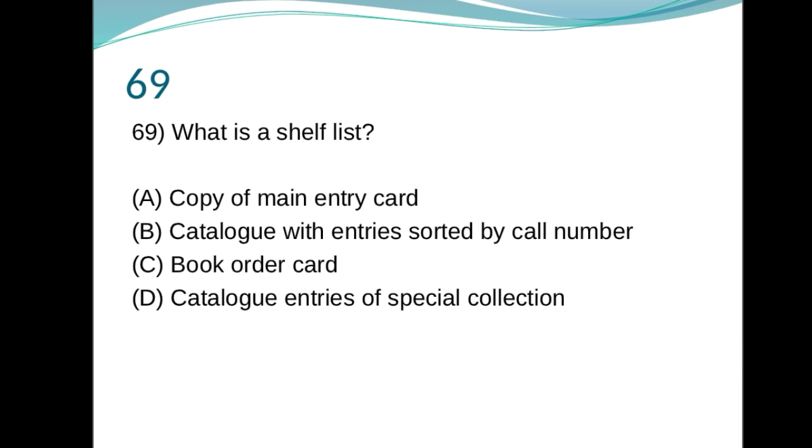69. What is the shelf list? Copy of main card, catalog entry stored by call number, book order card, catalog entries for special collection. B is written, catalog with entries sorted by the call number. B is the right answer.